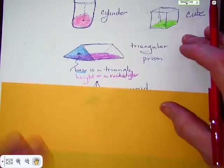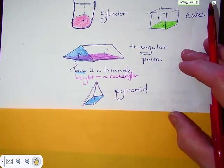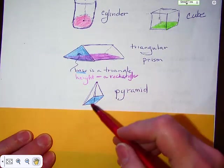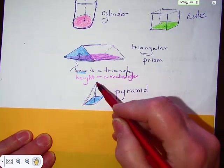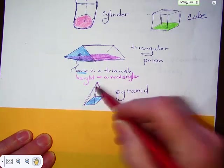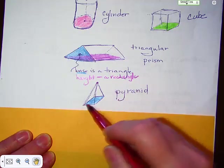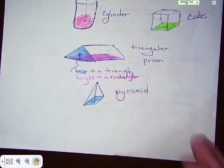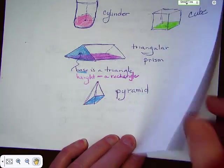And of course pyramid. This pyramid happens to have a rectangular base, but it has triangular sides. It would have four triangular sides. Not too bad. I'm sure you're kind of aware of these already.